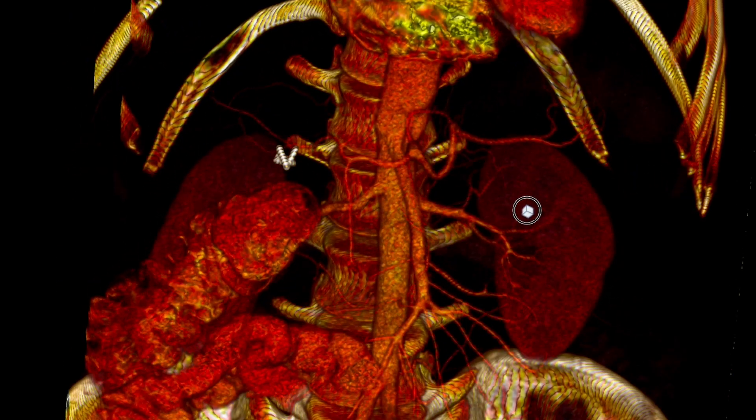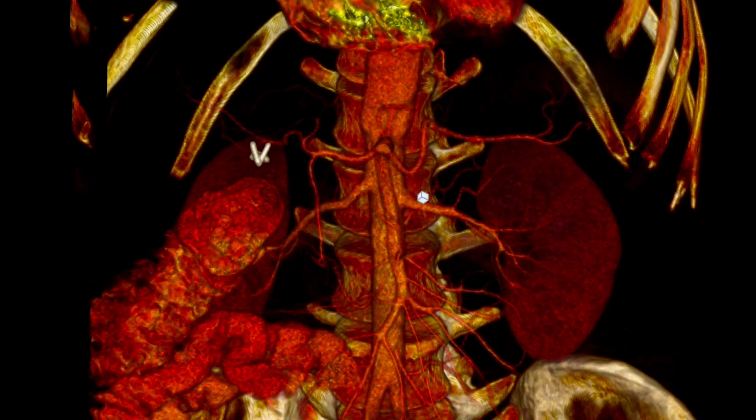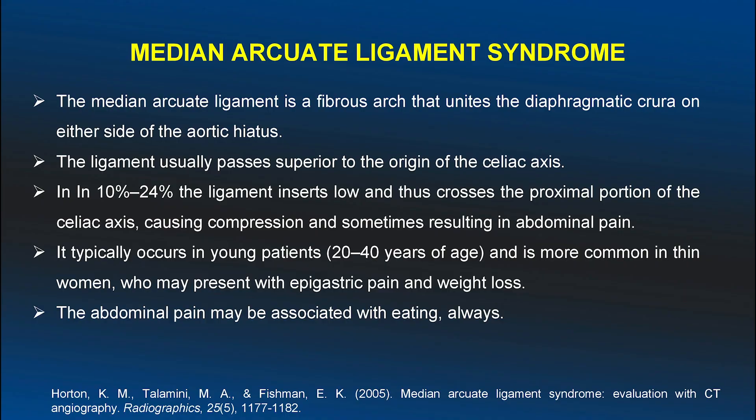The median arcuate ligament is a fibrous arch that unites both diaphragmatic crura bilaterally. In 10 to 20 percent of individuals it inserts low, causing compression of the proximal portion of the celiac axis, which results in abdominal pain secondary to ischemia, a result of kinking and intimal fibrosis.